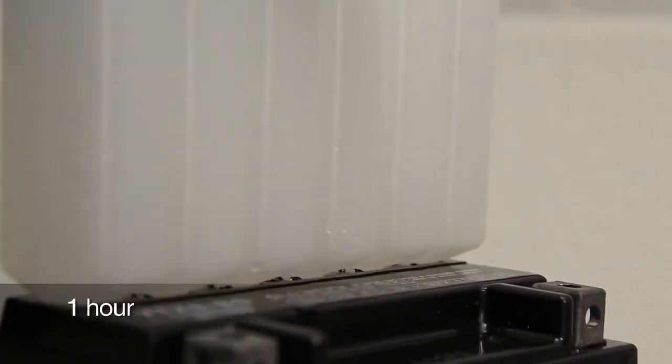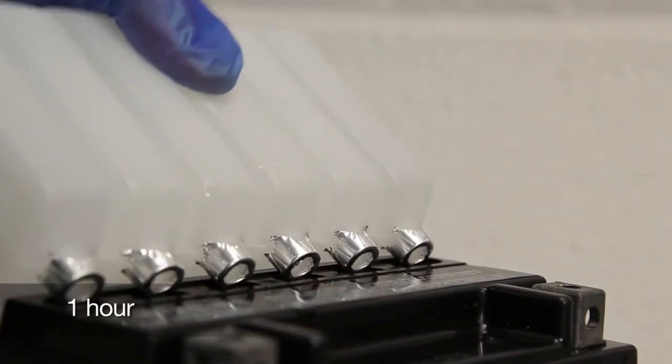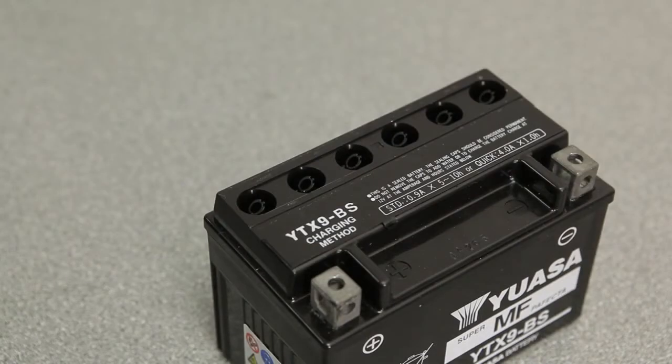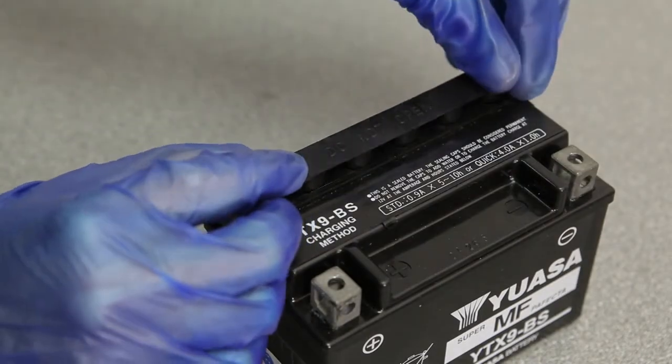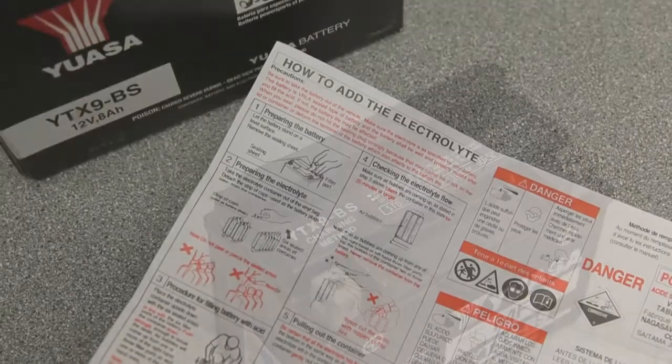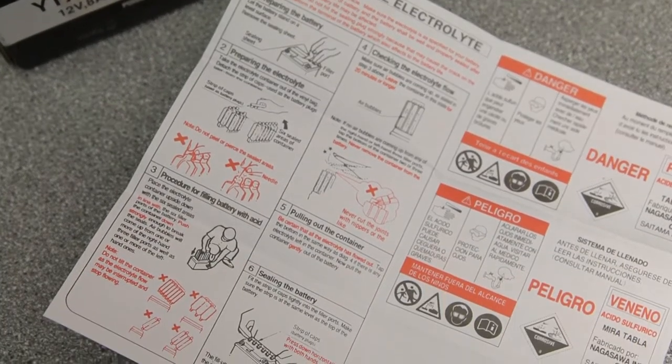Once empty, carefully remove the container and let the battery sit for one hour. After an hour, loosely place the cap strip over the filling holes and charge the battery according to the instructions included with the battery.